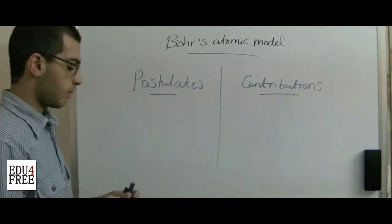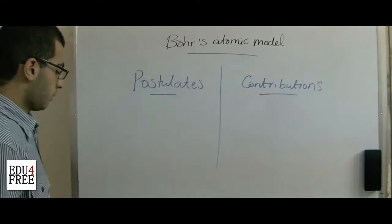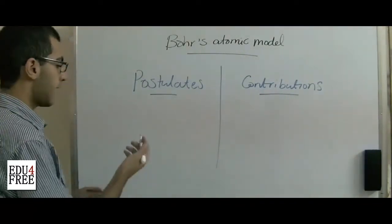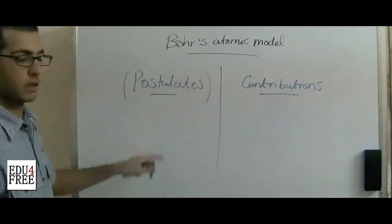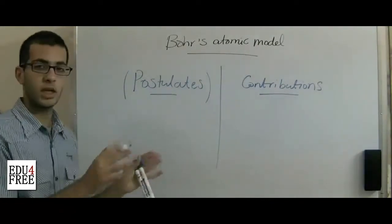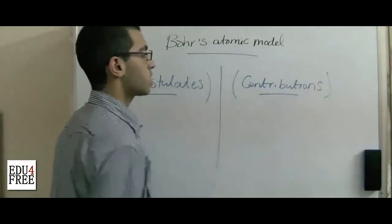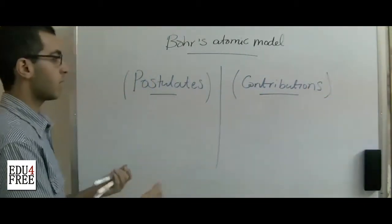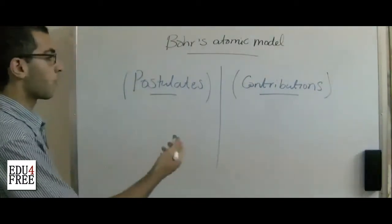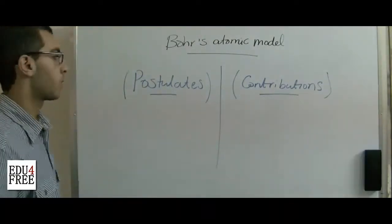We talked previously about Rutherford's atomic model. Bohr made his atomic model and he had some postulates — points which he took from Rutherford without changing anything — and he had some contributions in which he changed some concepts and made new discoveries over what Rutherford found in his atomic model.